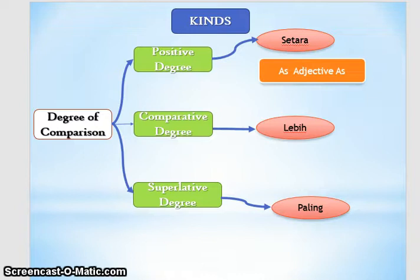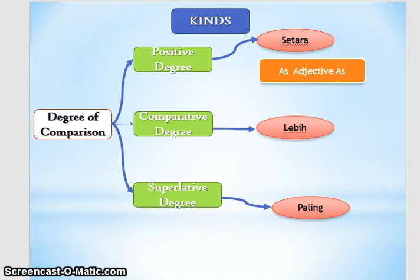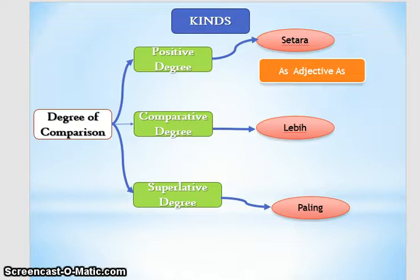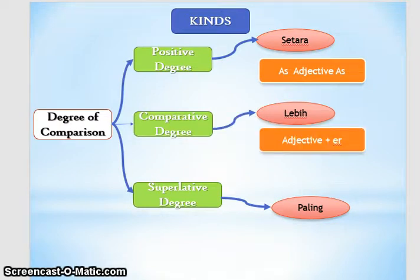Setiap kalimat dalam degree of comparison memiliki ciri-ciri. Untuk positive degree, ciri-cirinya adalah 'as adjective as'. Adjective adalah kata sifat, misalnya big, small, tall, short, fat, thin, clever, stupid. Ketika hasil perbandingannya sama, kita menggunakan 'as adjective as'. Ketika membandingkan satu hal dengan yang lainnya dan hasilnya lebih, kita menggunakan comparative degree.